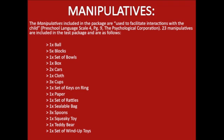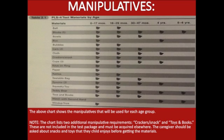The manipulatives included in the package are used to facilitate interactions with the child. Twenty-three manipulatives are included: one ball, five blocks, one set of bowls, one box, two cars, one cloth, three cups, one set of keys on ring, one paper, one set of rattles, one sealable bag, three spoons, one squeaky toy, one teddy bear, and one set of wind-up toys. Note that two additional items — crackers/snack and toys and books — are not included in the test package. The caregiver should be asked about snacks and toys their child enjoys before gathering materials.